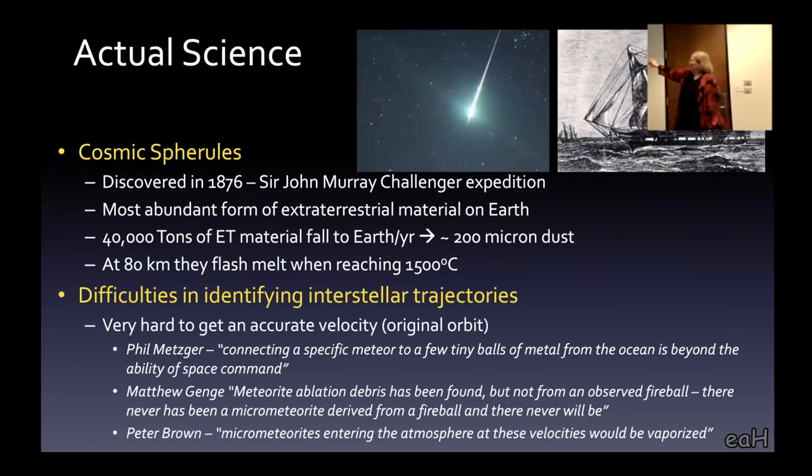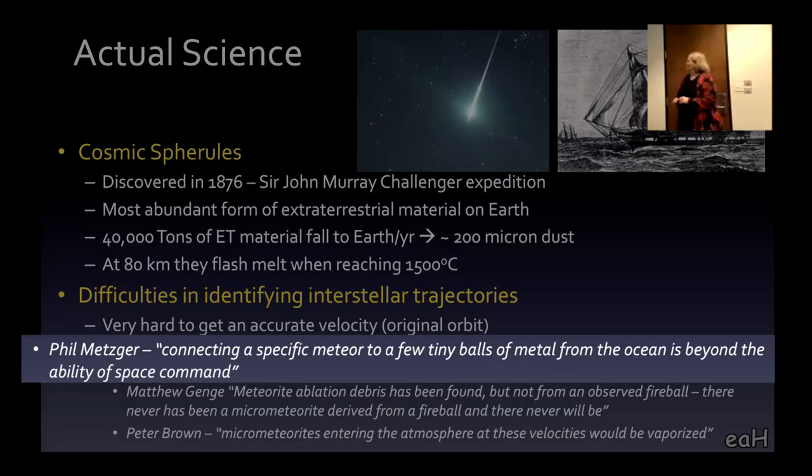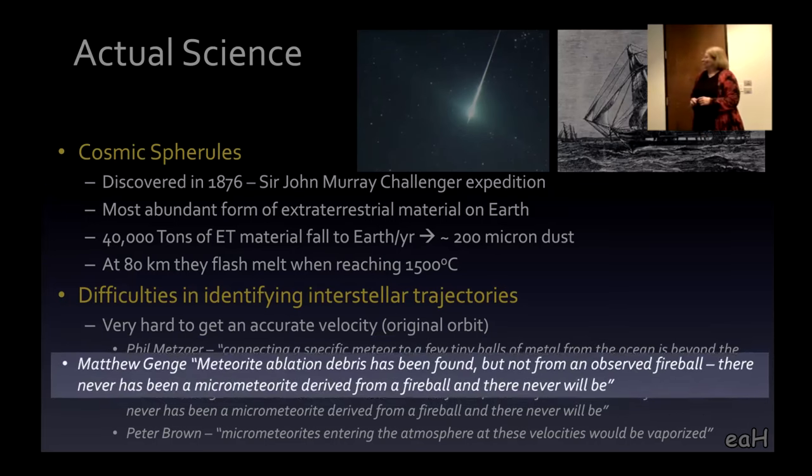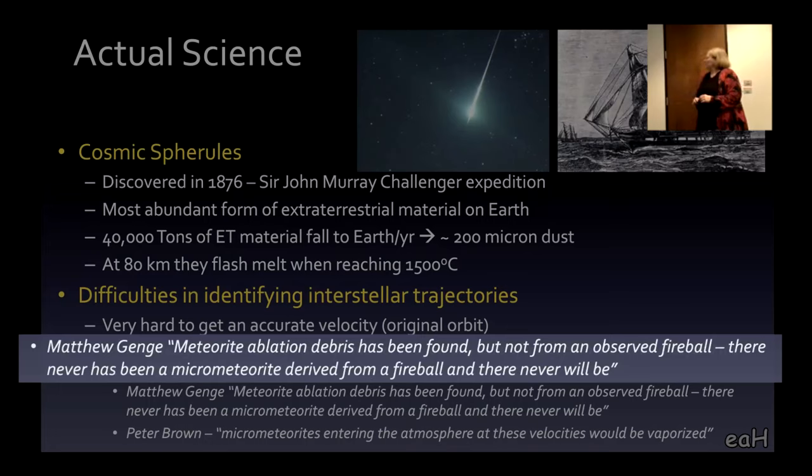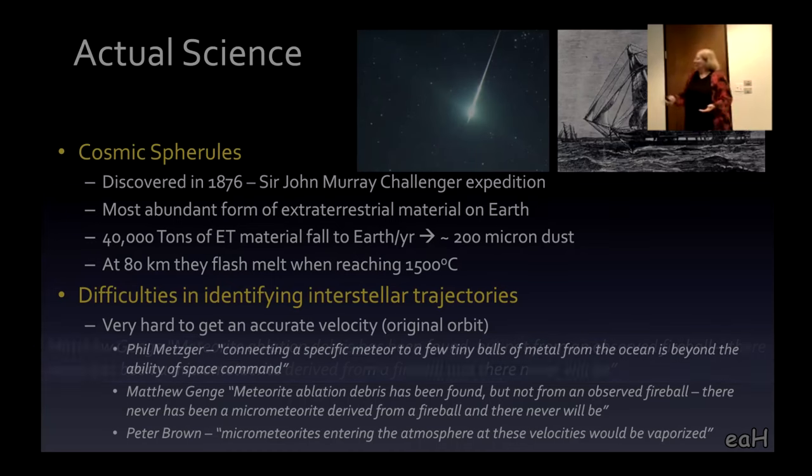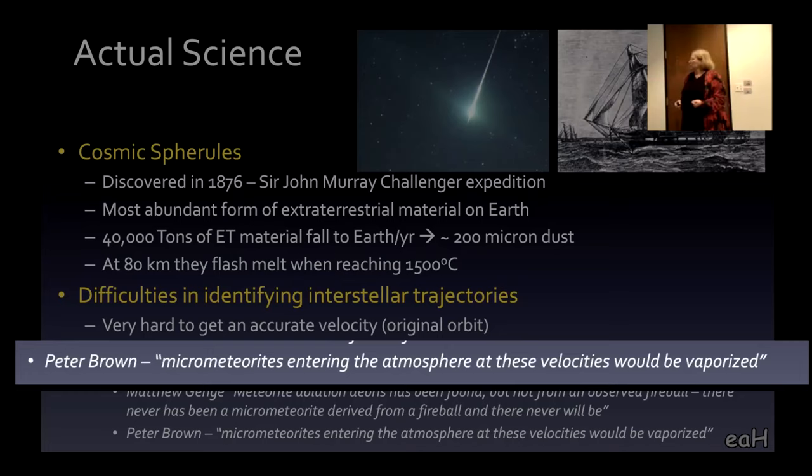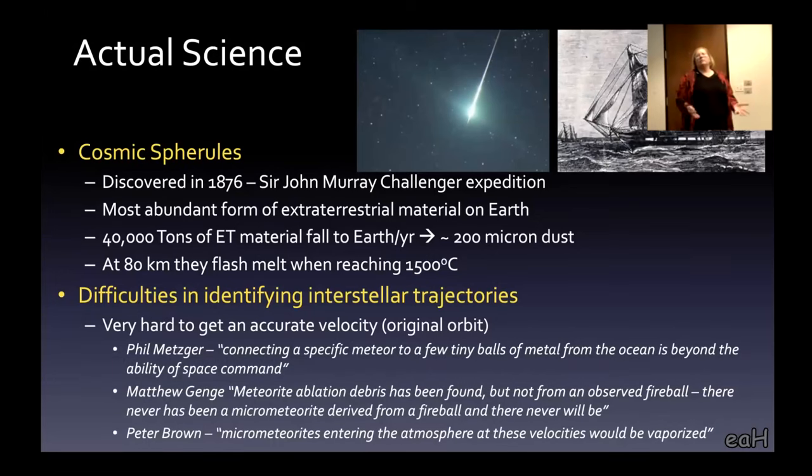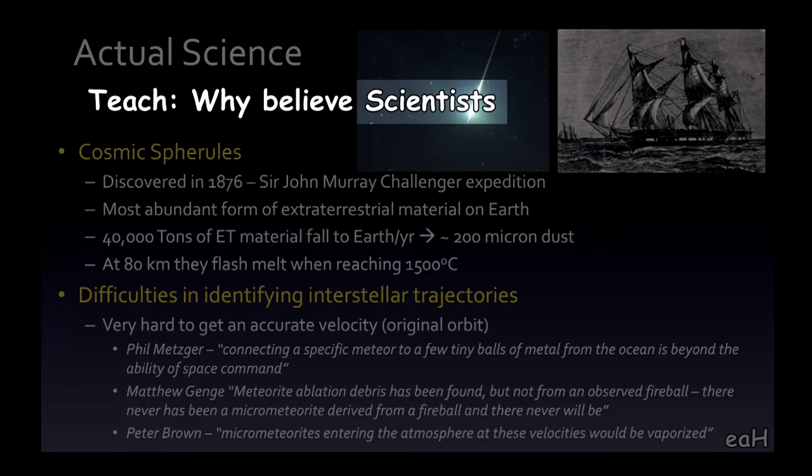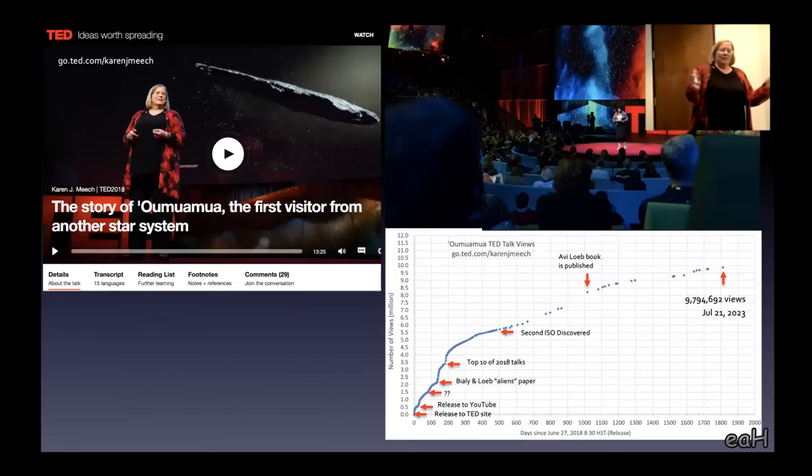There's 182 scientific papers on this stuff. Avi doesn't seem to pay any attention to it because that's inconvenient. These are all from scientists that are specialists in the field. Connecting a specific meteor to a few tiny balls of metal from the ocean is beyond the ability of space command to track. Micrometeorites entering the atmosphere at these velocities should be vaporized. Avi is waving this lovely science fiction tale, but unfortunately, he's going to teach students and the public, why should you believe scientists?